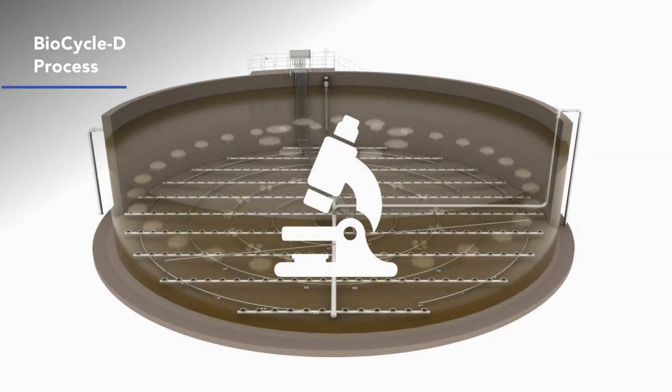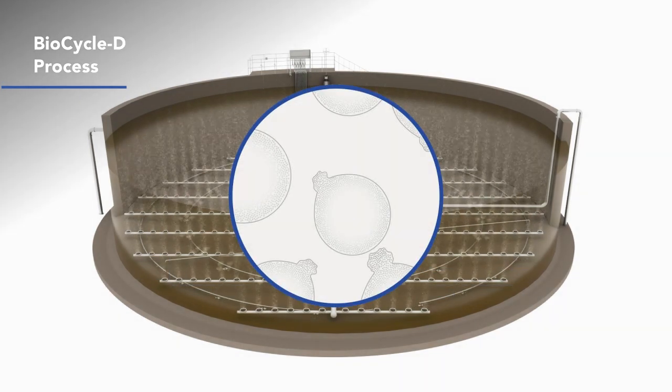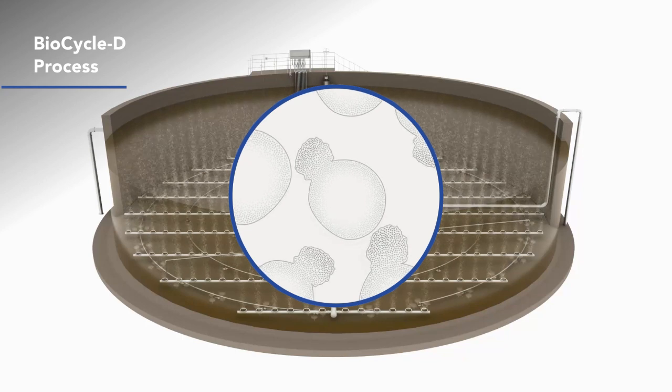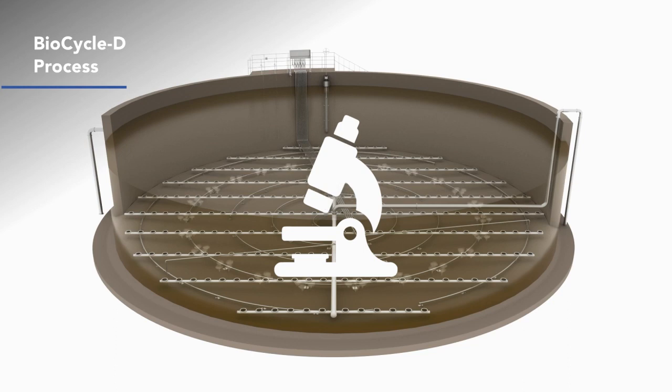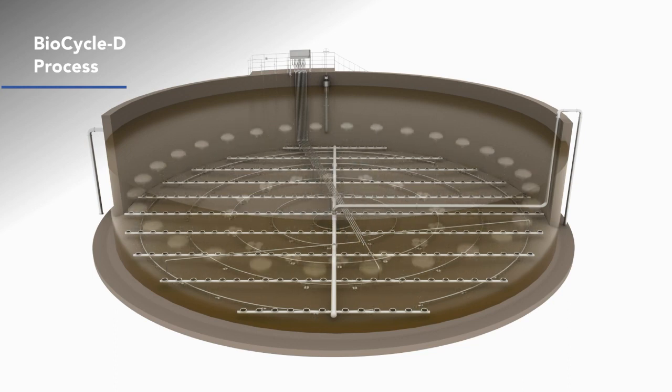Cycling air on and off causes cell walls to rupture, which allows for increased volatile solids destruction and improved sludge dewaterability, reducing polymer consumption. The system continues to alternate between aerobic and anoxic cycles.